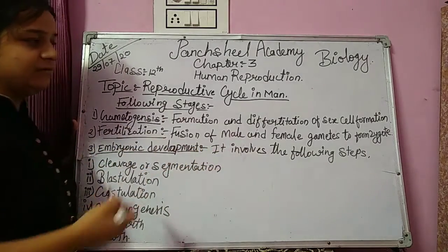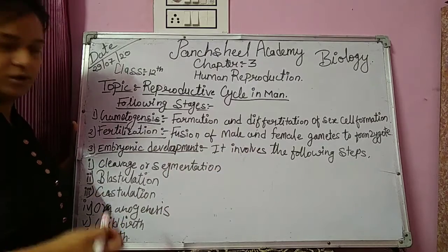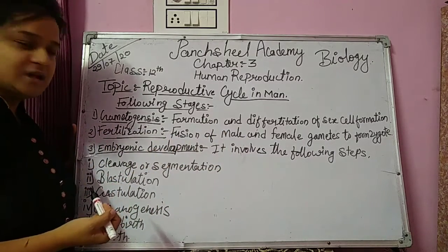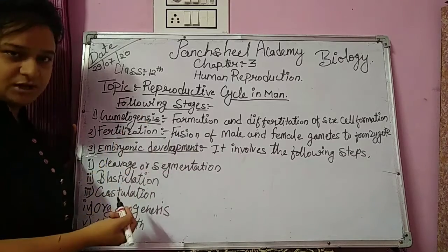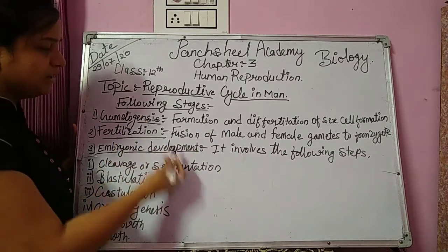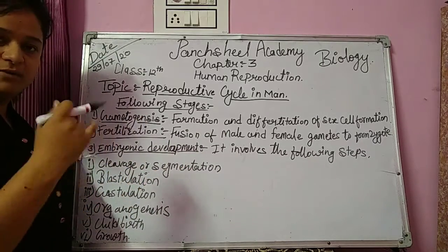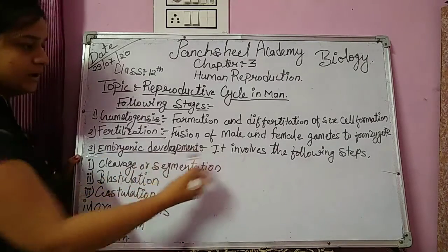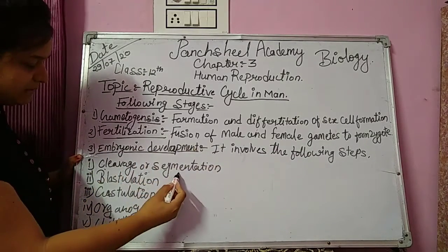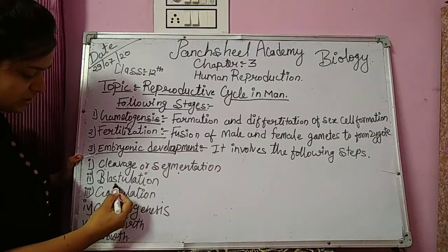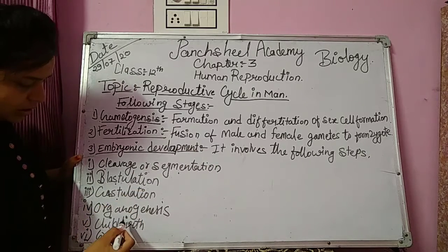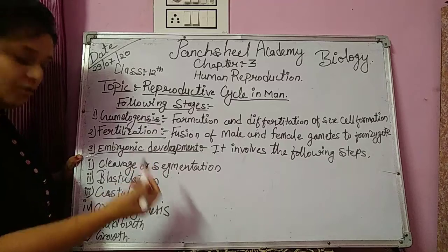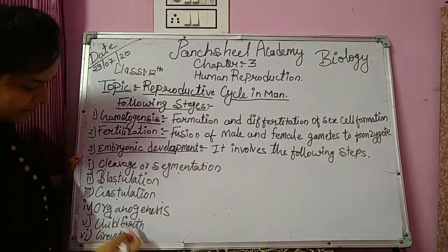The fusion of male and female gametes to form a zygote is called fertilization. The next stage is embryonic development, which is completed in the following stages: cleavage and segmentation, blastulation, gastrulation, organogenesis — that means formation of organs — and finally childbirth and growth.